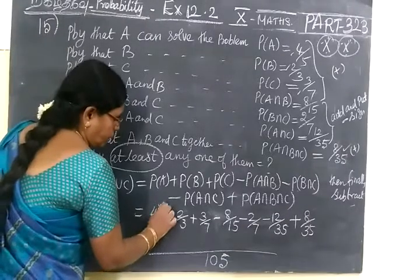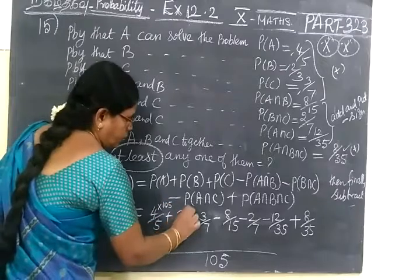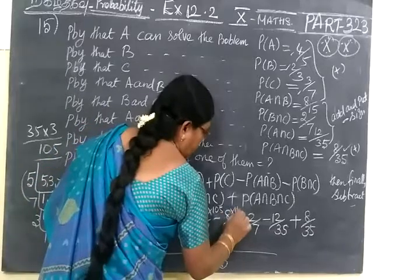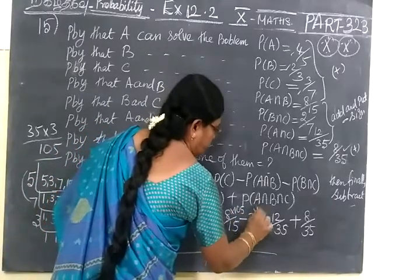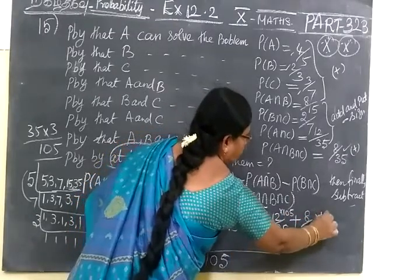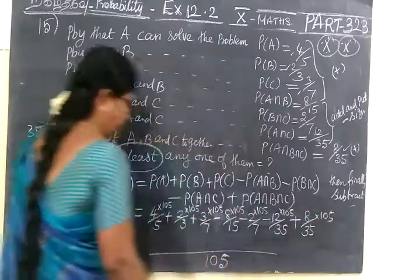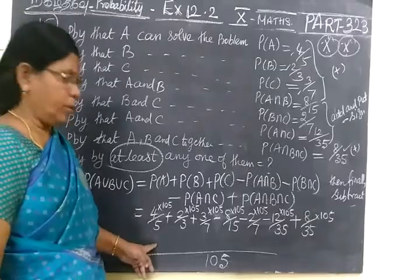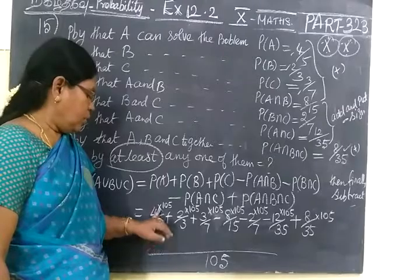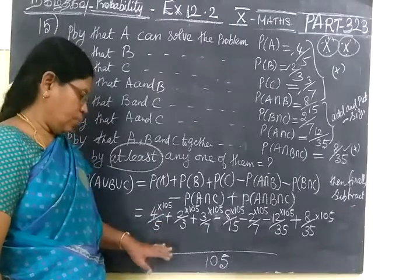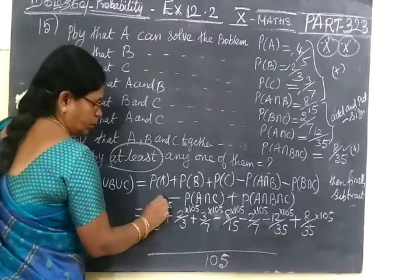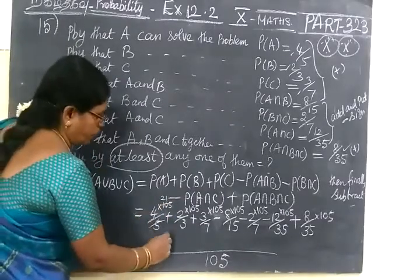So in the numerator, for all the numbers you write 105, 105, 105. For all the numbers you write, here also you write 105, then 105. Or if you know, directly you can do it, making the denominator equal. Any method you can use. We can make the denominator equal. So numerator also multiply by the same number. Any way you do. So here 5, 1 times, then 21. So 21 into 4.